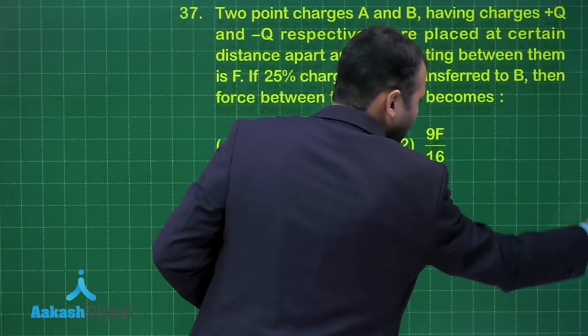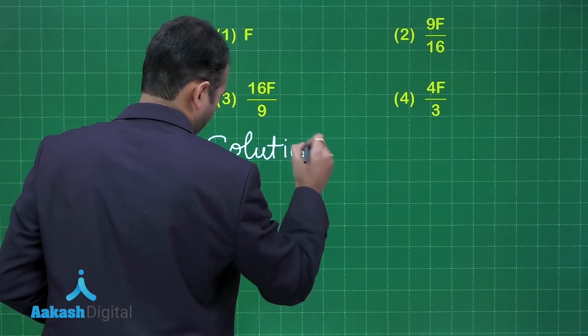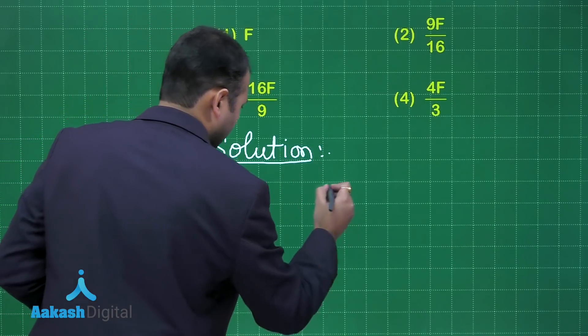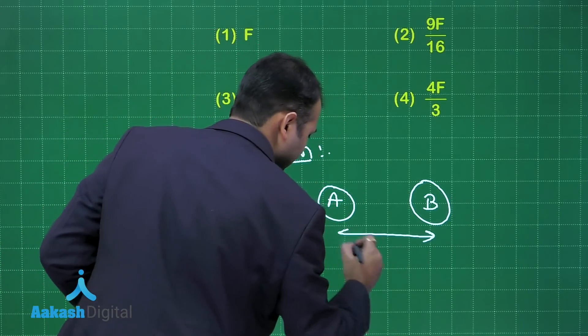It's a very easy question. Let's start the solution. So let's take this as A and this as B. Distance between them let's take it as small r.